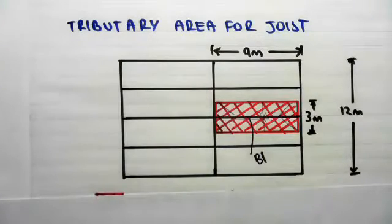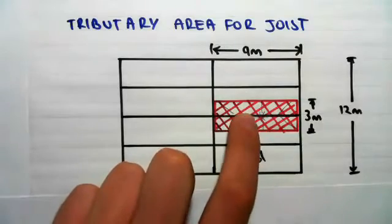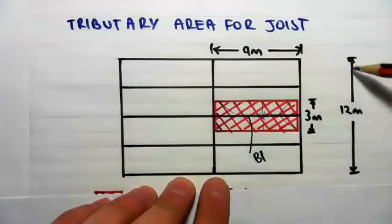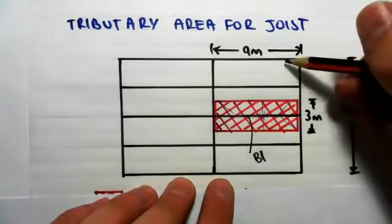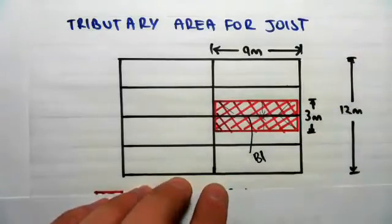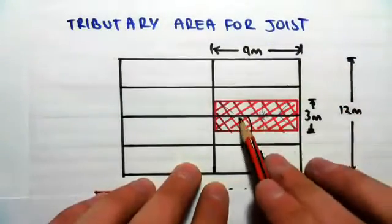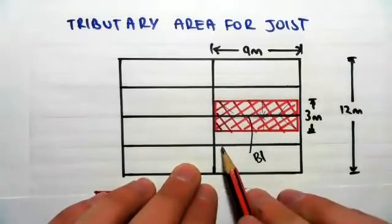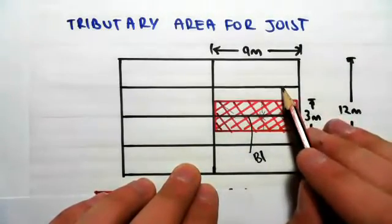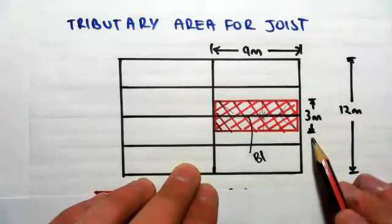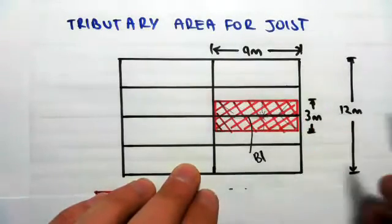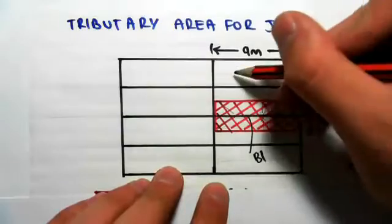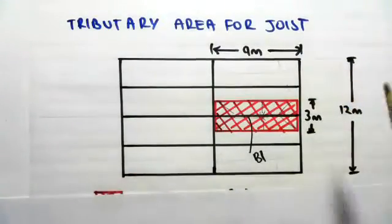Just to remind you what that looks like: if we take a typical tributary area for this joist — the B1 joist — we know that the total length is 12 meters, which means the distance between each joist is 3 meters. So the area of slab this joist carries will be 1.5 meters on each side. Each joist carries 3 meters total. The edge girder will carry 1.5 meters of slab on each side.